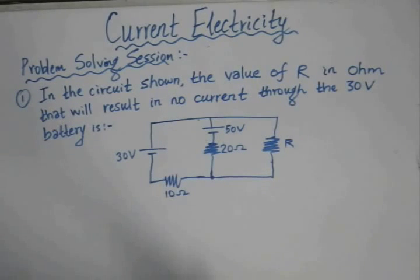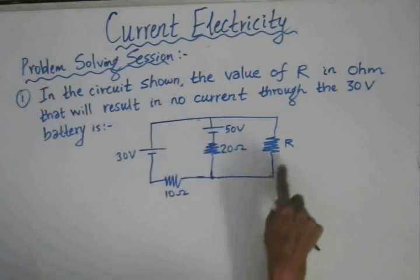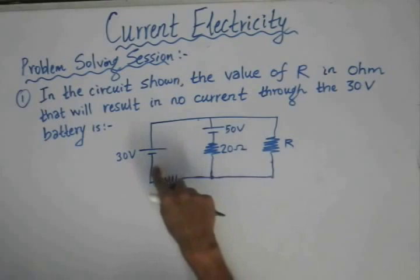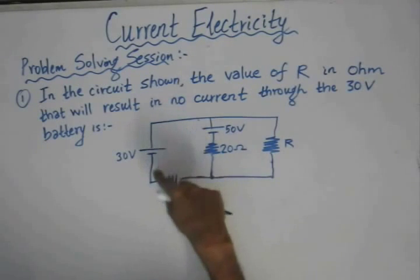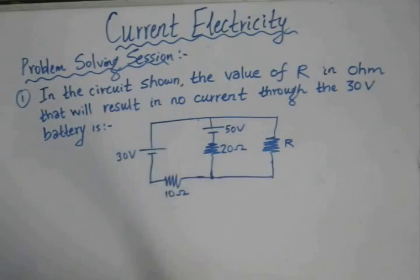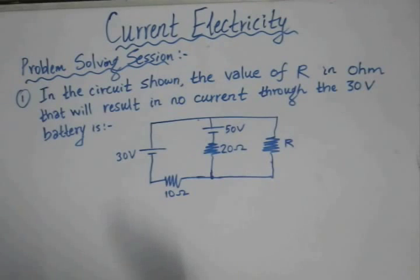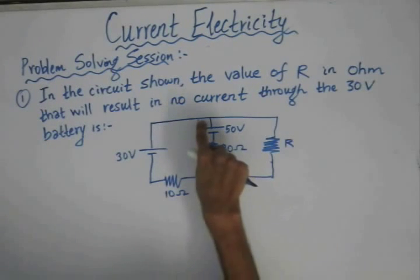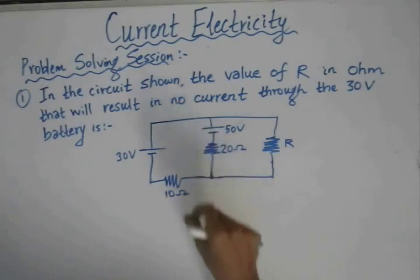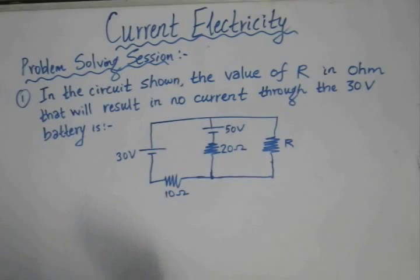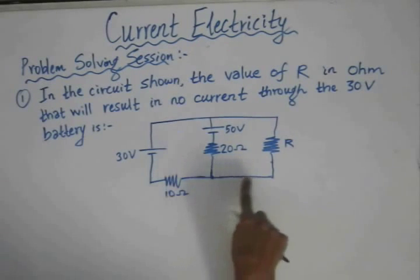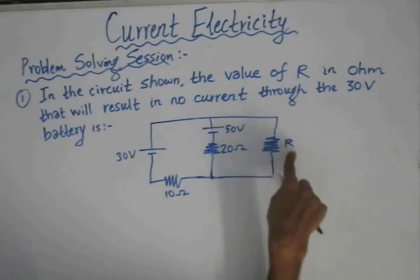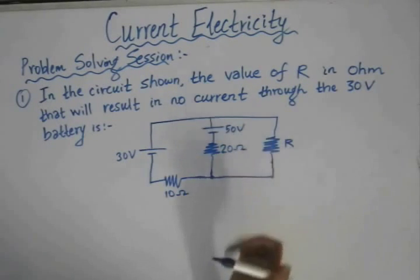We have to determine the value of the resistance for which there is no current in this branch of the circuit. We will be applying Kirchhoff's voltage and current law and use that to get the value of the external resistance R present in the circuit.